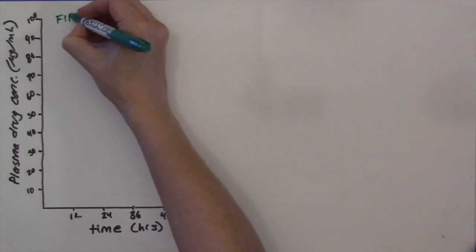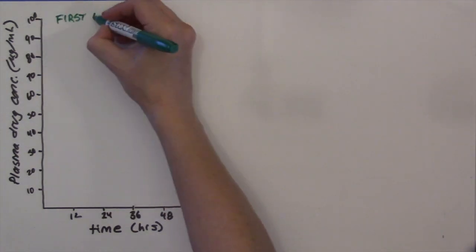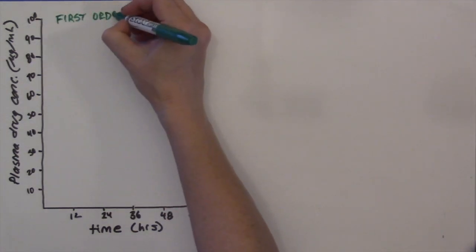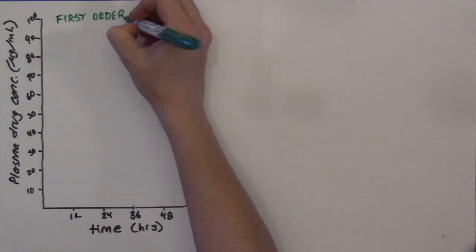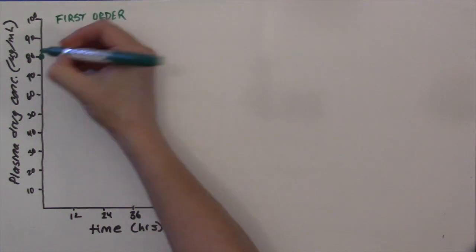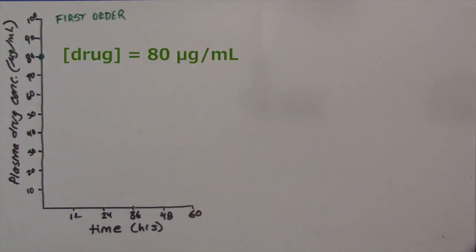At the zero time point, we administer an IV dose of the drug. Let's say this brings our plasma concentration up to a level of 80 micrograms per milliliter. This is our concentration at the time of drug administration.